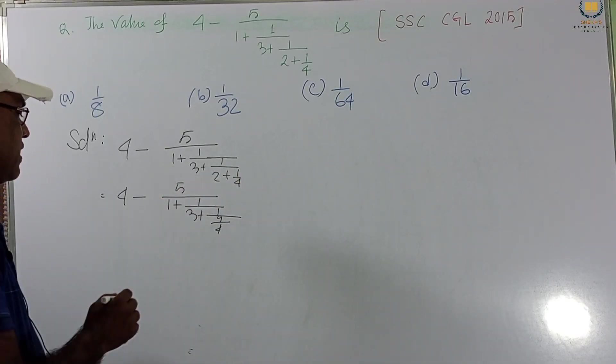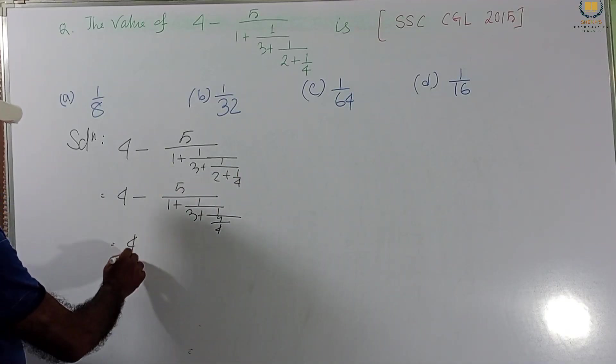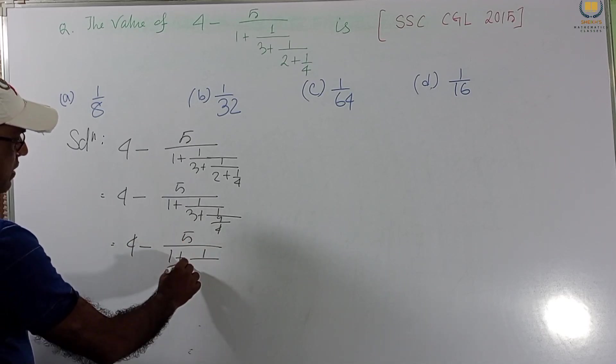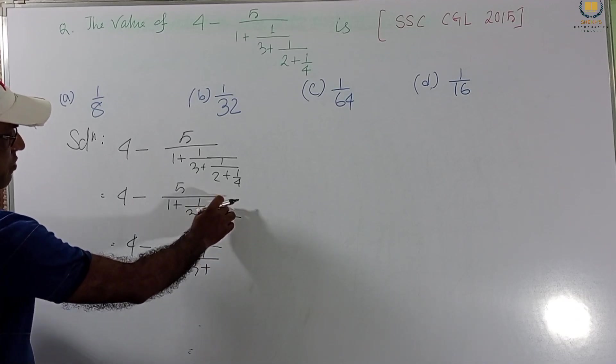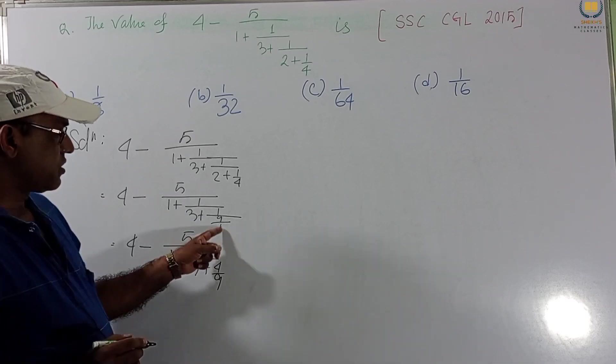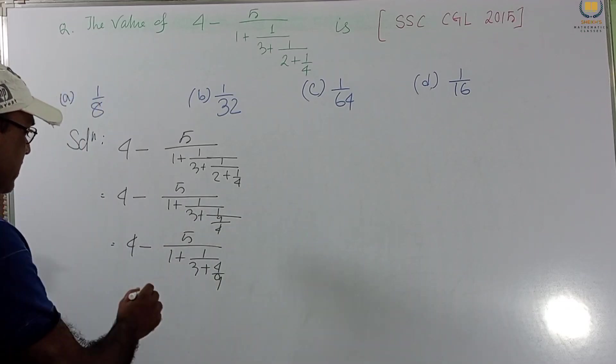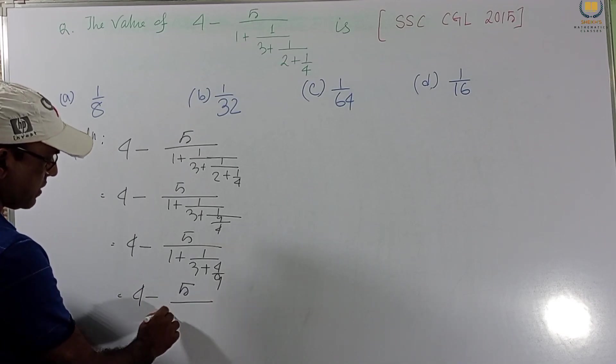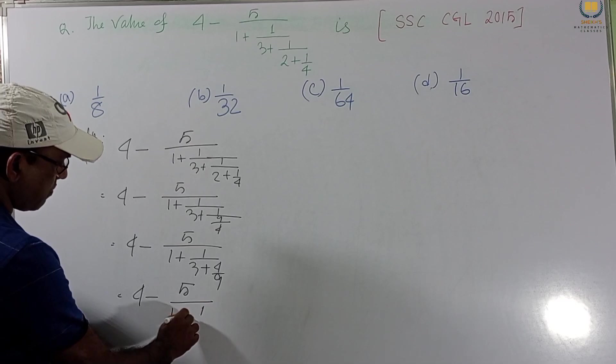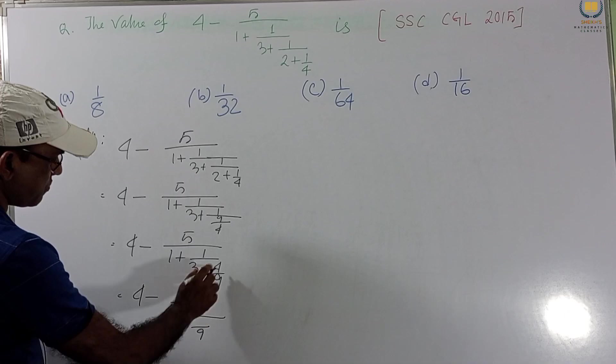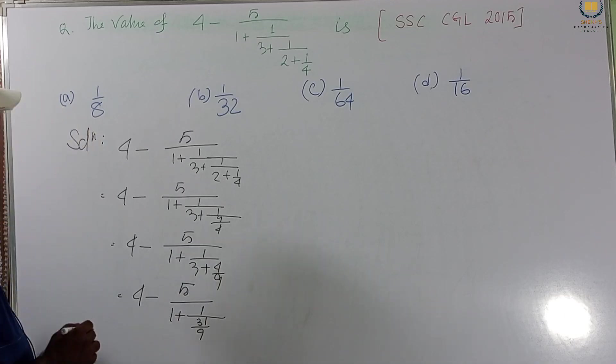So, LCM is 4. This is 8 plus 1, 9. So, this will be 4 minus 5 by 1 plus 1 by 3 plus. This 4 becomes in numerator. This is 4 by 9. We get this. This 4 by 9. Again, we taking LCM. This 1 plus 1 by,